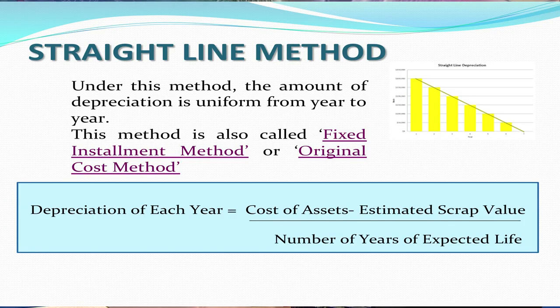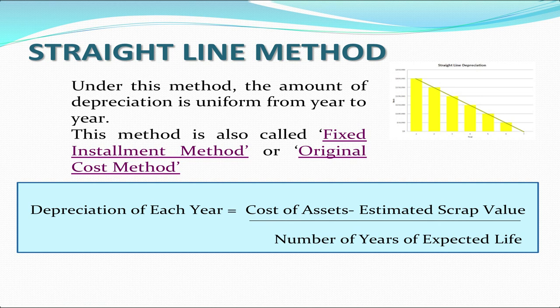Let us understand the first method, which is the straight line method. As the name suggests, the straight line method is a method in which the amount of depreciation remains constant or uniform from year to year. The amount calculated does not change from year to year — it remains the same. That is why this method is also known as the fixed installment method or the original cost method, because depreciation is calculated on the original cost of the asset.